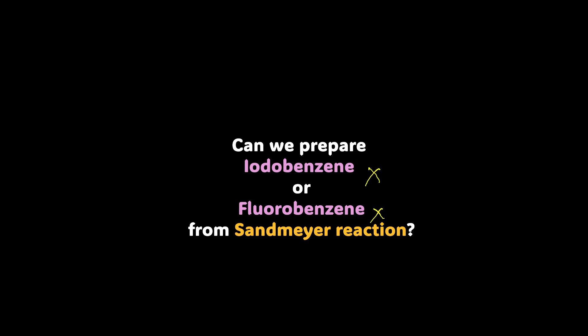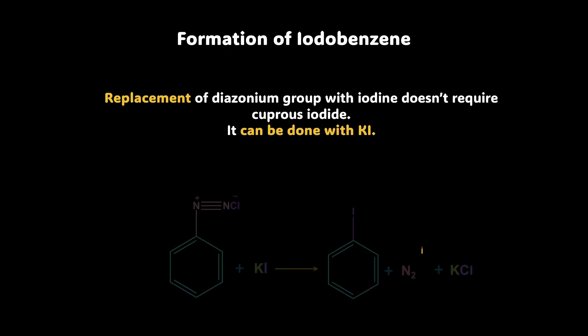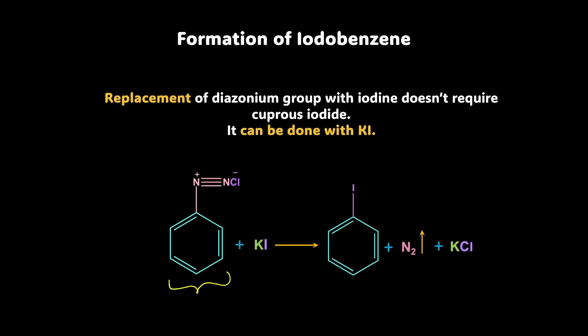So how can we prepare iodobenzene or fluorobenzene? Well, we can use another method. What we can do is, we can simply take benzene diazonium chloride and to it, we can add potassium iodide. Yes, directly, nothing else required, no cuprous iodide required. Directly, we can add potassium iodide and what we get as a result is iodobenzene. Again, in this benzene diazonium chloride, this nitrogen gas has evolved out and what else we get is potassium chloride. So this replacement of diazonium group with iodine doesn't require cuprous iodide and we can just directly use KI. It's as simple as that.